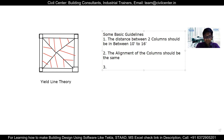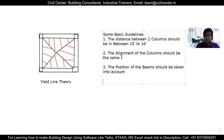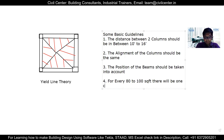The third point is that the position of the beams should be taken into account while deciding column positions. By looking at the plan, you first determine what the position of your beams will be, and based on that you decide the position of your columns. The fourth point is that for every 80 to 100 square feet, there will be one column. So if you have a 1,000 square feet plan and someone asks how many columns, you can say approximately 1,000 divided by 100 — that is 10 columns, plus or minus 2 to 4 — as a rough idea.